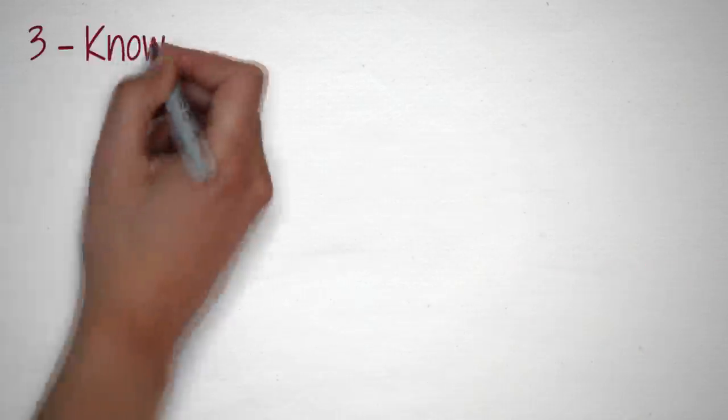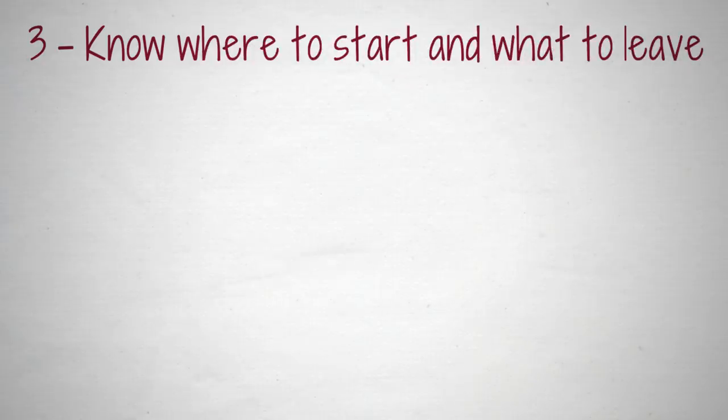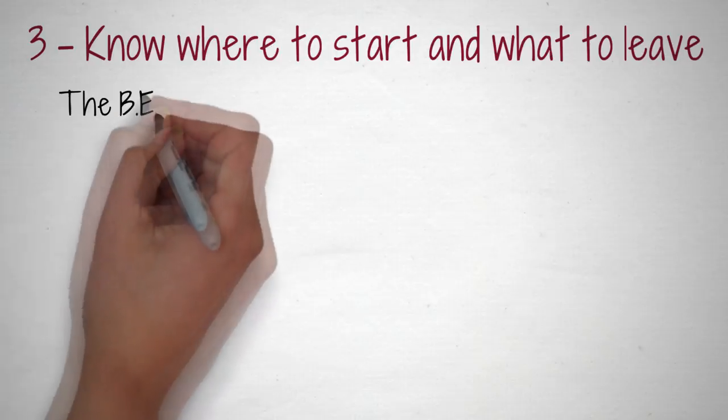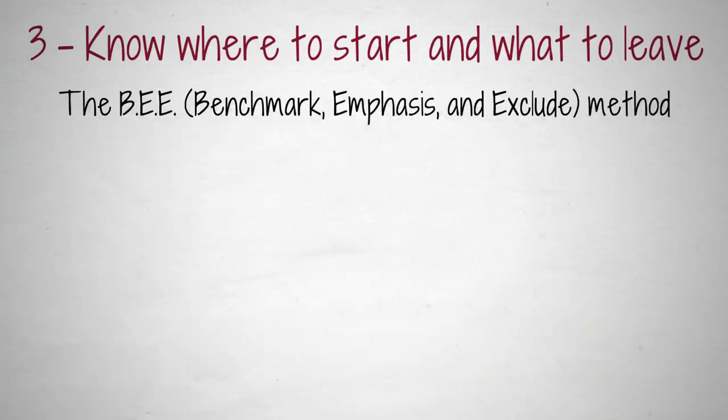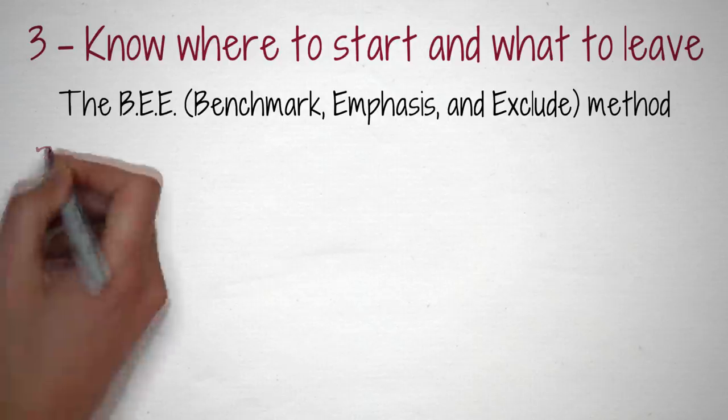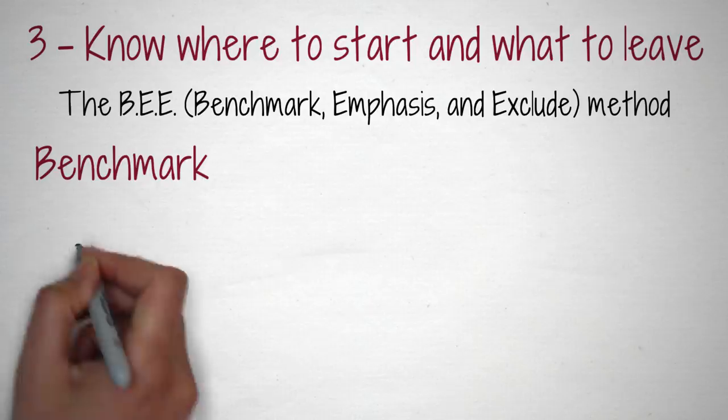Three: Know where to start and what to leave. Knowing where to start and what to leave later will make a massive difference to your learning speed. The BEE — Benchmark, Emphasis, and Exclude method — will help you do that. This brings you to the third step — Benchmark.